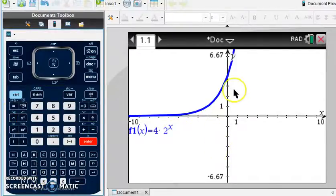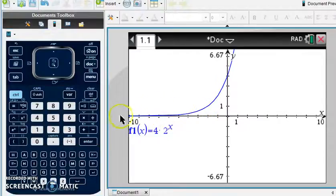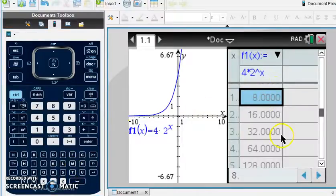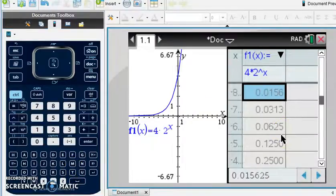Hit enter, and you'll see your function. You can identify your y-intercept. We can see there's an asymptote. We can view, if I do control T, the table of values, showing my values here.